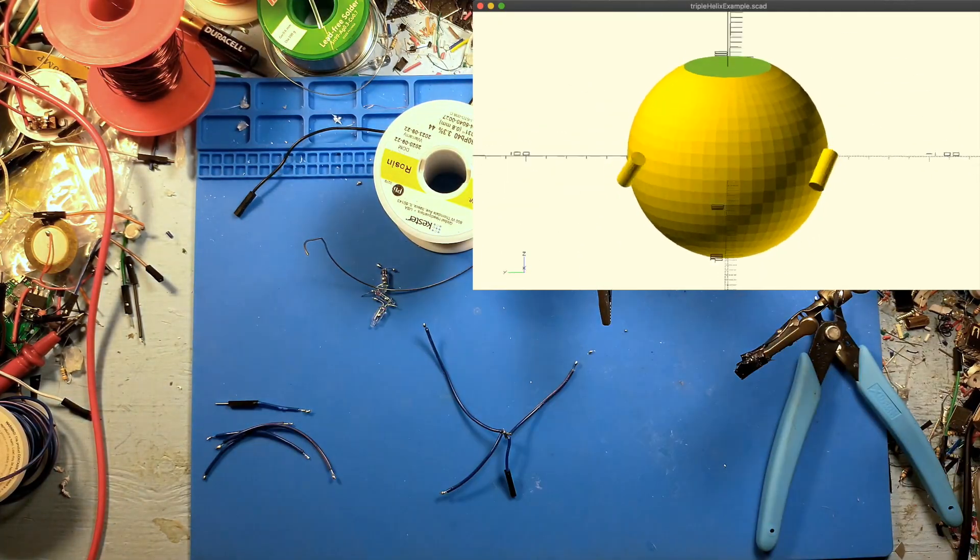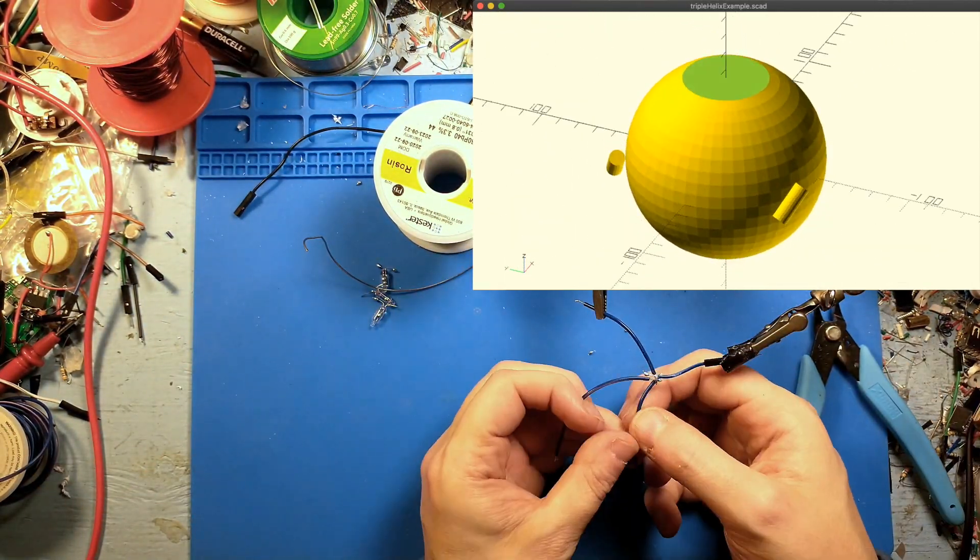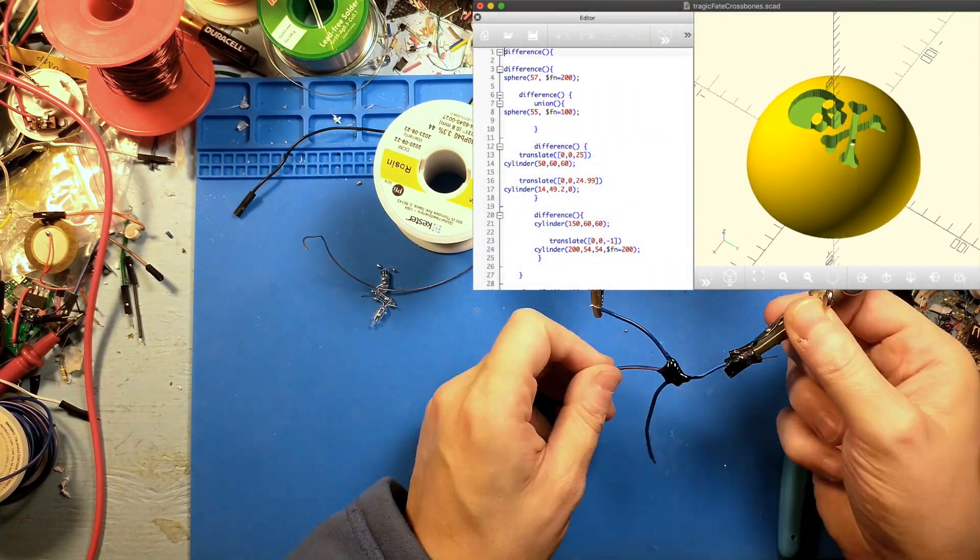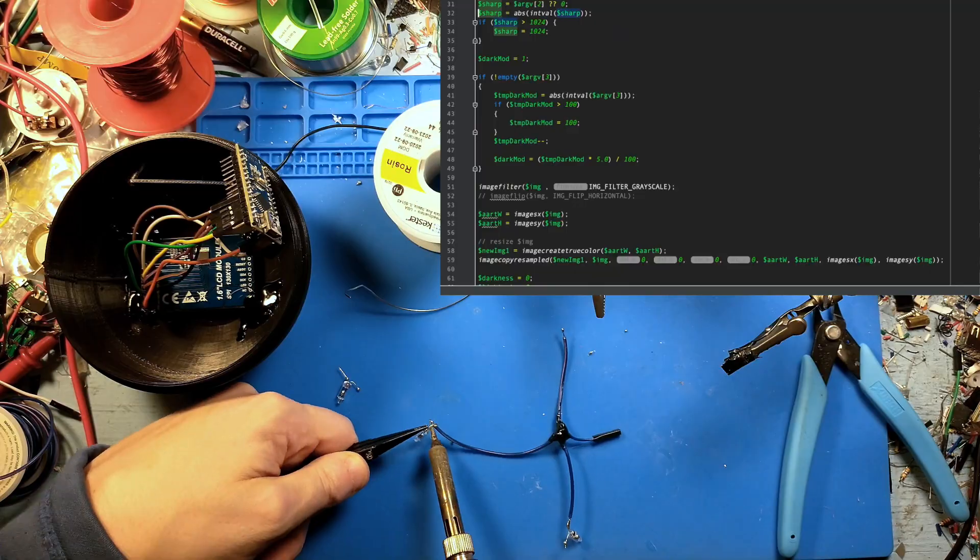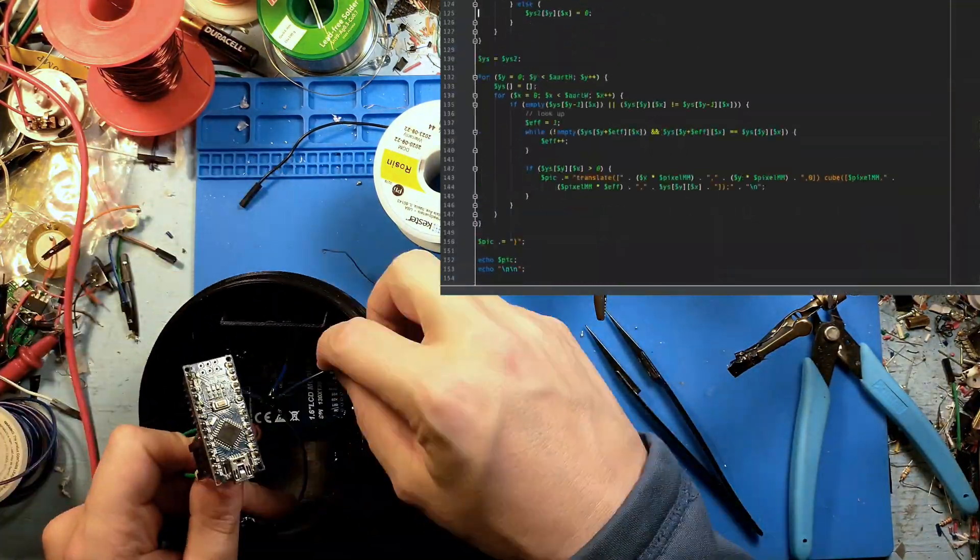Each one points a different direction in a helix around the sphere's equator, so no sideways motion can cut the power. For the shell, I drew up plans in OpenSCAD and wrote a script for turning images into OpenSCAD commands to generate the skull and crossbones shape from a PNG.